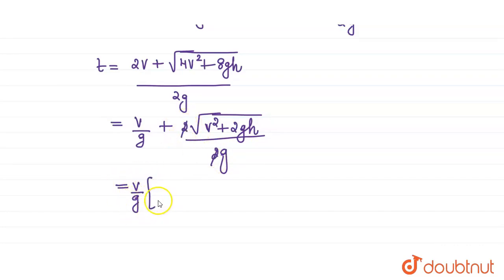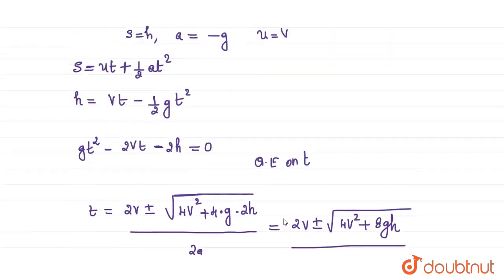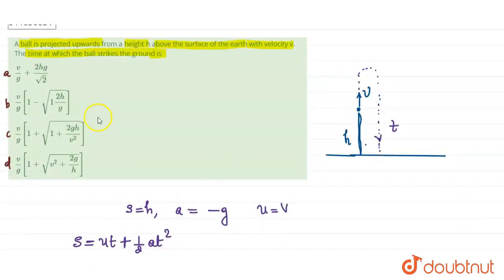On taking v/g common, we get 1 plus root of - on taking v squared outside - we get 1 plus 2gh divided by v squared. This is the equation for the time in this case. Our answer, v/g times (1 plus root of 1 plus 2gh/v squared), matches with option C.